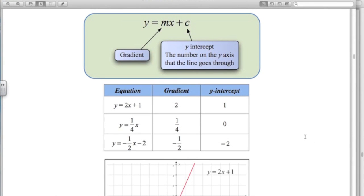Here's some examples of straight lines. Gradient and y-intercept: 2x plus 1, a quarter x, so the number in front of the x is a quarter, the y-intercept would be 0. There's no number on the end. And this last one here, negative 1 half x minus 2, gradient of negative 1 half, y-intercept of minus 2.